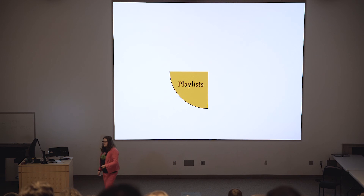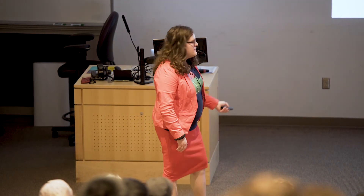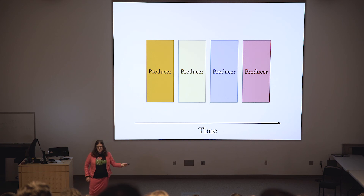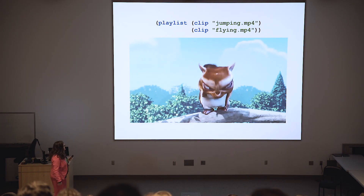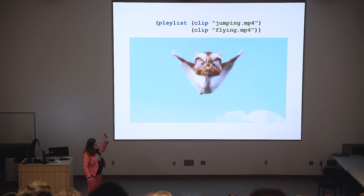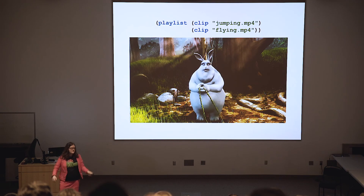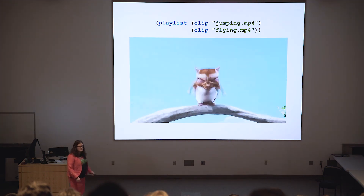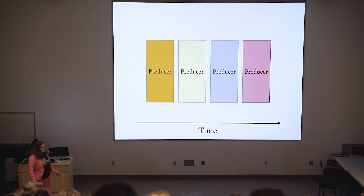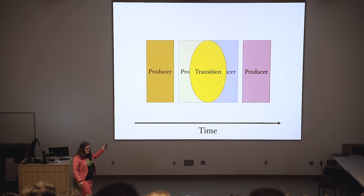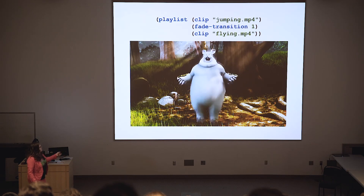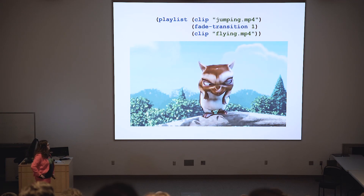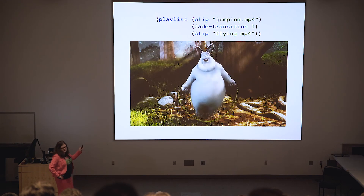Filters only work on one producer, so we still need a way to compose producers together — and that's where playlists come in. Playlists compose producers temporally, putting one after the other. This code is being run live in Slideshow, where you have a looping video of a bunny jumping and a flying squirrel taking off. Sometimes you don't want to just jump from one clip to the next — you might want to fade from a clip. Transitions serve as a bridge to connect multiple producers that are being appended together. We can take the exact same clip, except now we fade to the squirrel and fade back to the bunny.